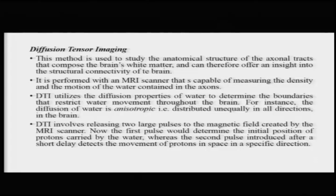The connections between neurons in the brain are via axons, and studying how these axons connect and extend into different brain areas provides a lot of detail about structural connectivity — which areas are connected, which project to others, and which receive input from other areas. This information is very useful for figuring out what kinds of networks of brain areas are involved in particular cognitive tasks. DTI is typically performed with an MRI scanner capable of measuring the density and motion of water contained in the axons, utilizing the properties of this water to determine boundaries that restrict its movement.